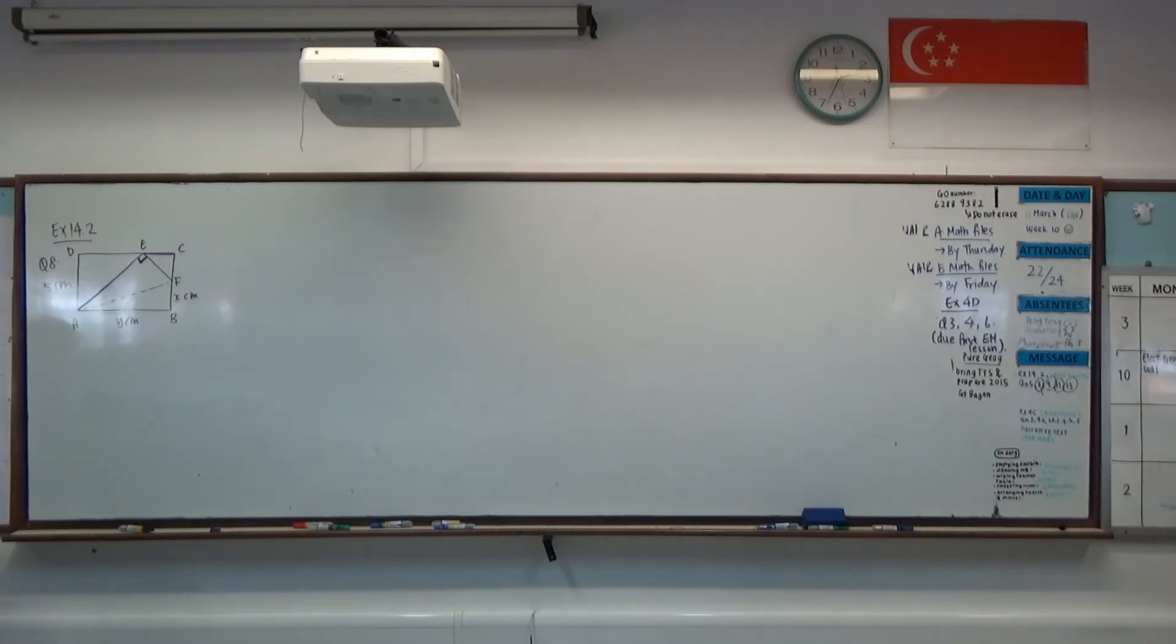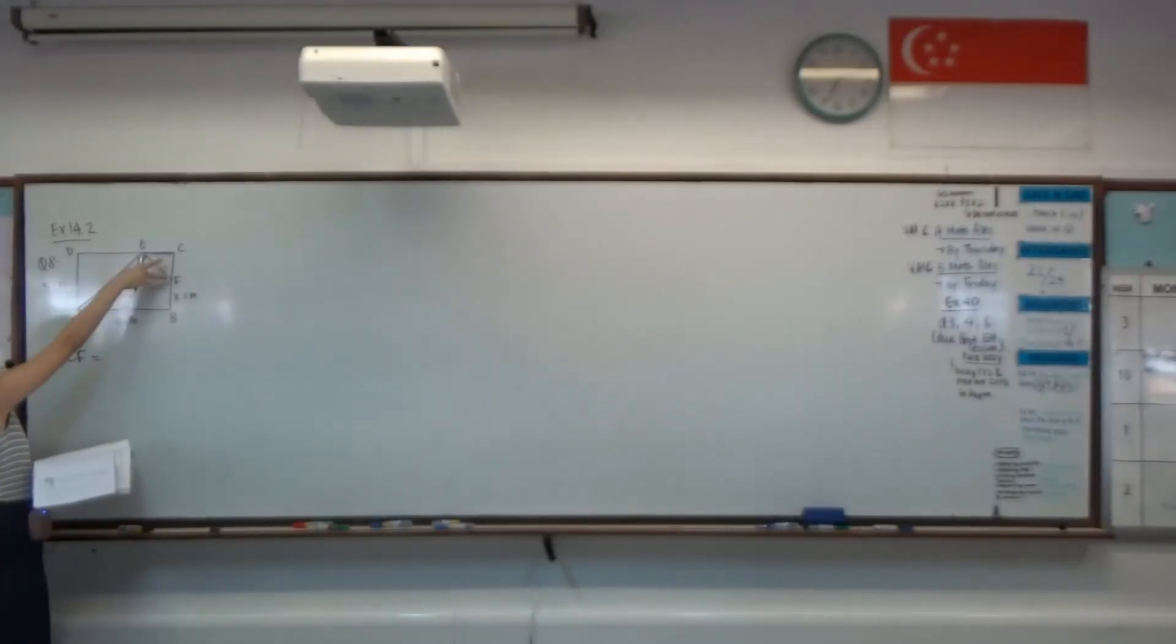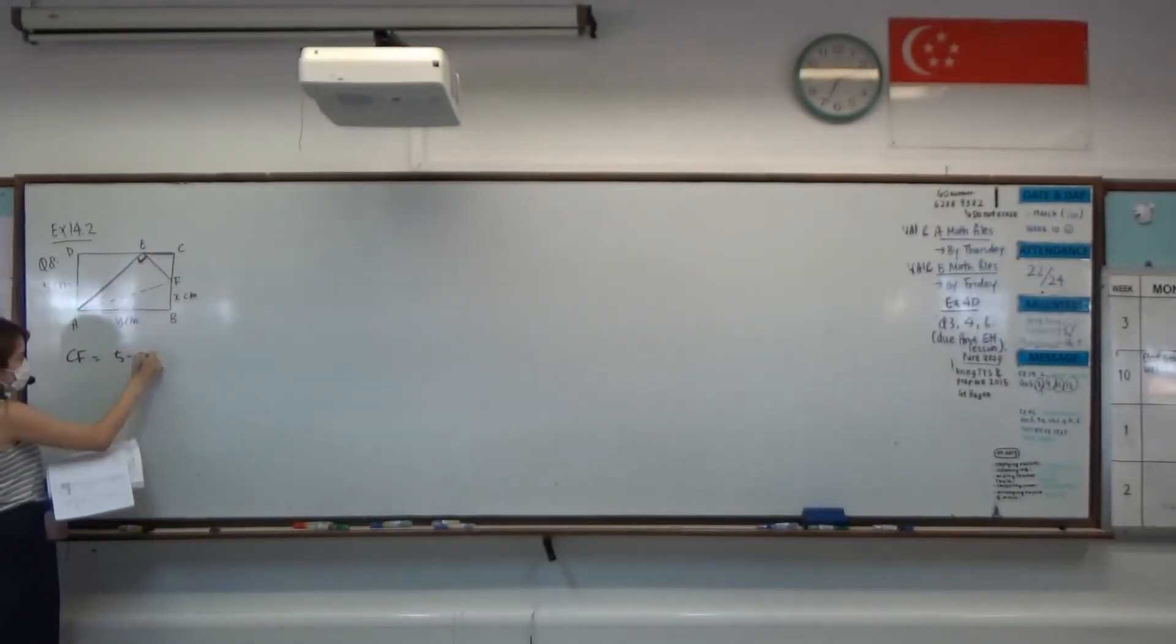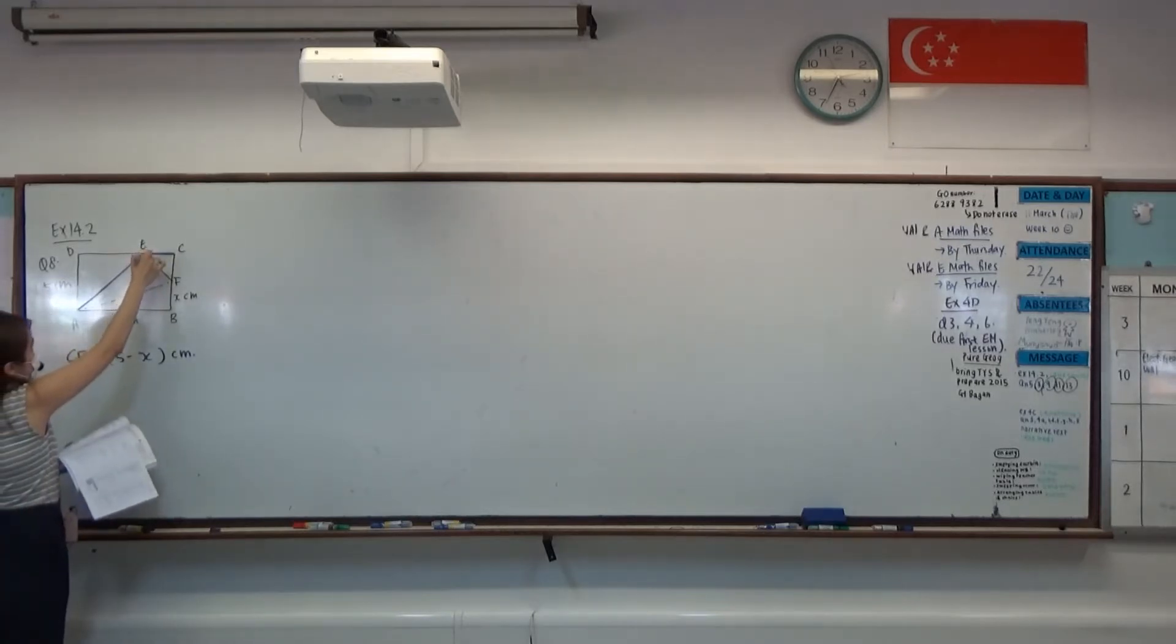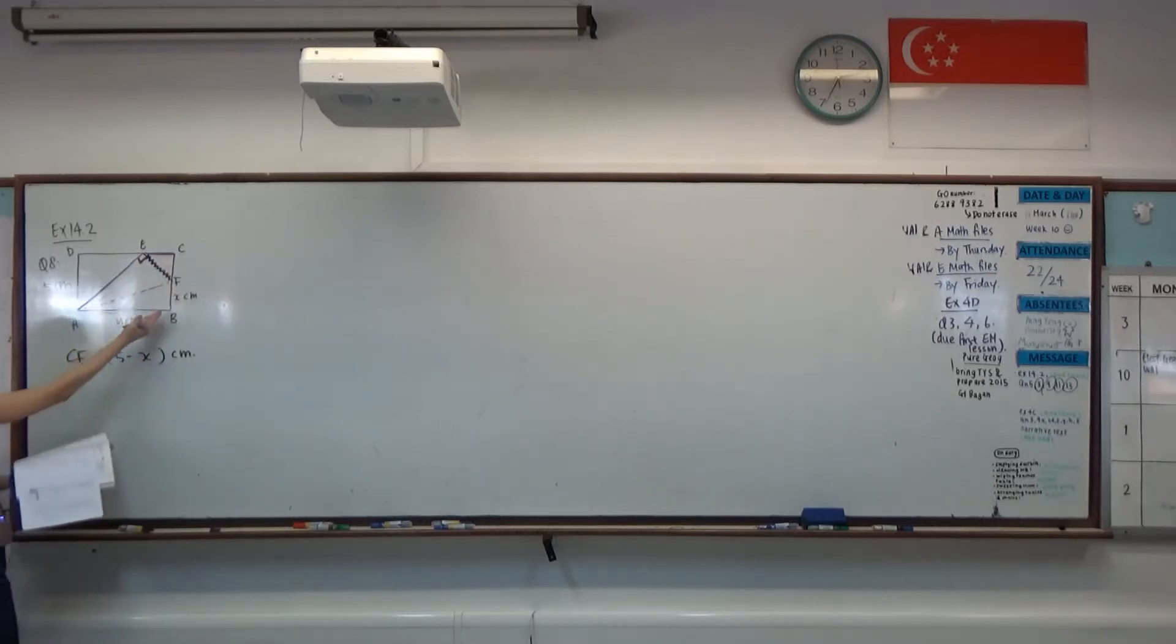In order to do that, we will first figure out what is the length of CF. So the length of CF over here would actually be 5 minus X cm. Then following that, we can also see that EF itself, this length here, if you were to fold the paper up like that, this length will actually be the same length as this one here.